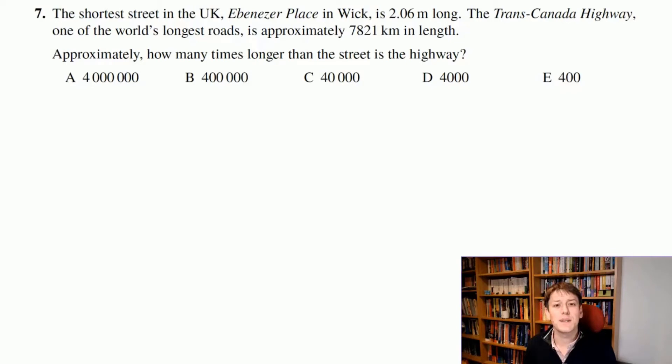Now the question says approximately how many times longer than the street is the highway, and this word approximately is key here. You can see from the answers they're all nice round answers. So we want to round off the numbers before we do the calculation and just get an approximate answer. So 2.06 meters long, that's approximately 2 meters. 7,821 kilometers, you might be tempted to go for 7,800 here, but looking at the answers they're all just one significant figure. So I'm going to say it's 8,000 kilometers.